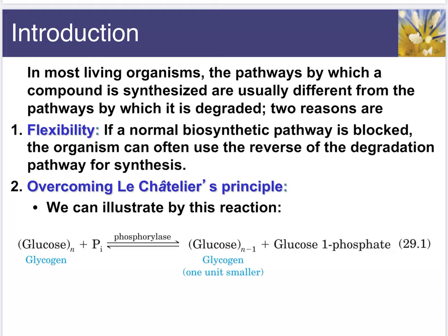So to start off, what we're going to talk about here is that for a lot of the breakdown — the catabolic reactions — we usually have different anabolic reactions to build structures in our bodies instead of just a reverse of those same breakdown reactions. The reason for having different pathways that aren't simply reversals is for two reasons. One: flexibility. If the normal pathway gets blocked, we could actually reverse the degradation pathway, so it gives an alternative pathway — you get two instead of one.